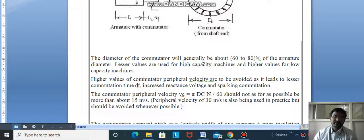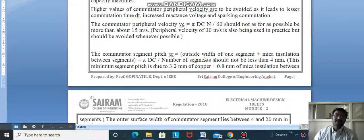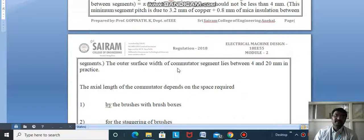The commutator segment pitch, the outer width of one segment plus mica insulation between segments, equals π Dc divided by number of segments and should not be less than 4 mm. Minimum segment pitch is 3.2 mm of copper plus 0.8 mm of mica insulation. The outer surface width lies between 4 and 20 mm in practice.